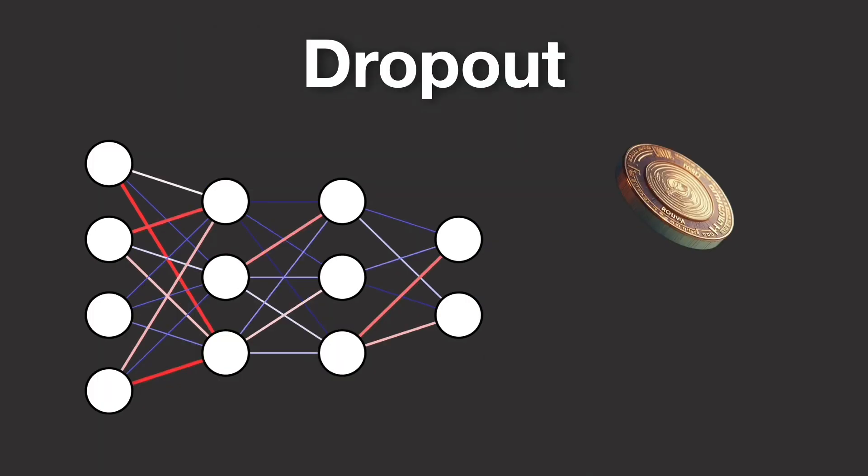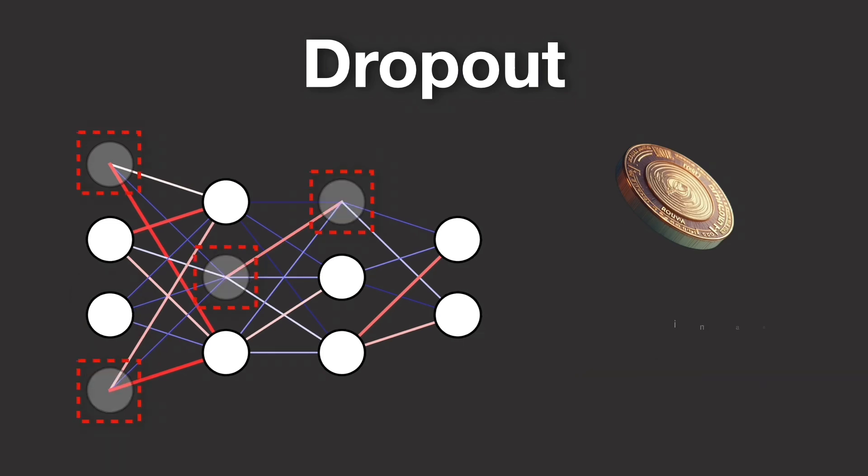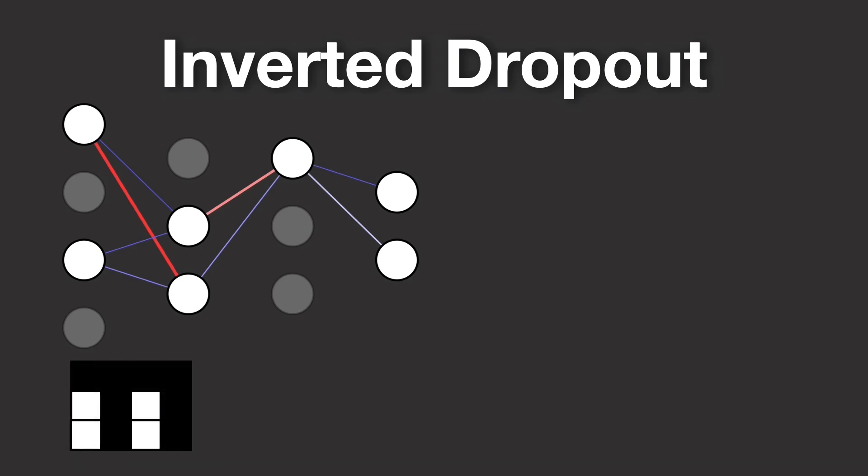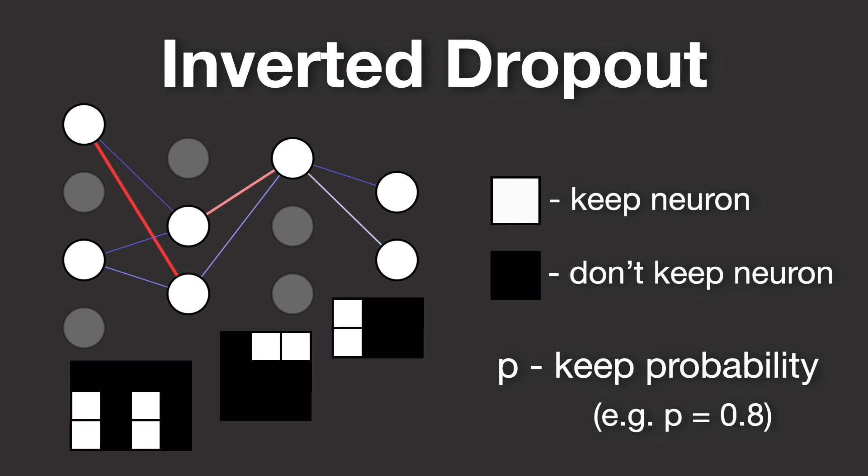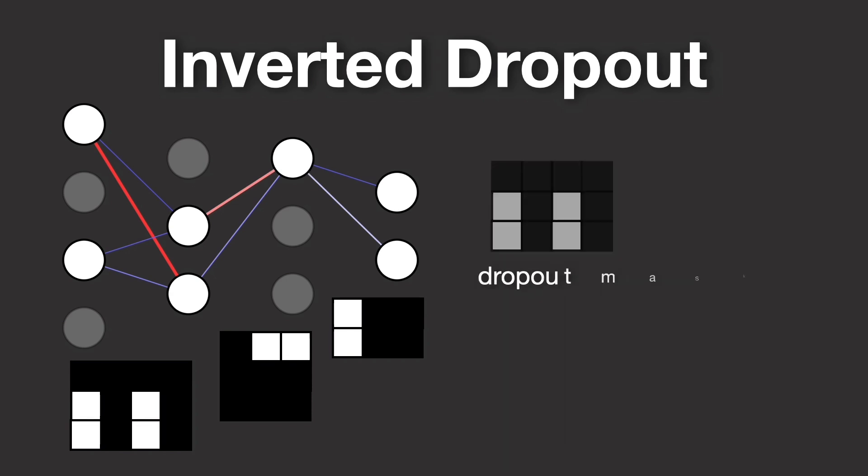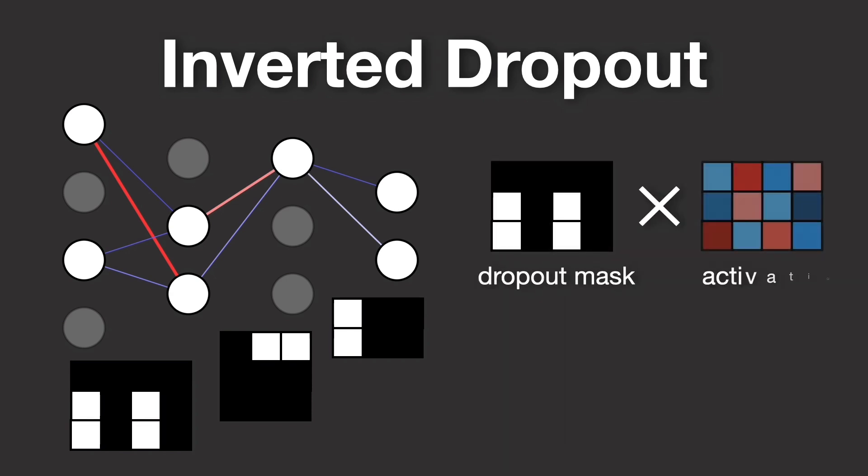In summary, dropout works by randomly disabling neurons during training, which forces the network to learn redundant, robust representations that generalize well. Dropout is usually implemented in practice with the inverted dropout technique which, with its scaling step, keeps the expected activation levels consistent, allowing the network to transition smoothly from training to testing.